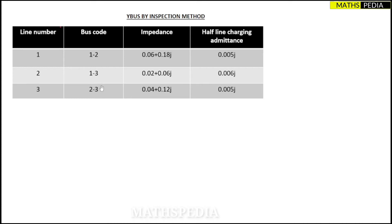In the third column, impedance or admittance will be given. Always remember: Y-bus requires all elements to be in admittance. If impedance is given, you must convert it to admittance — the reciprocal of impedance gives admittance, so take one divided by the impedance value.